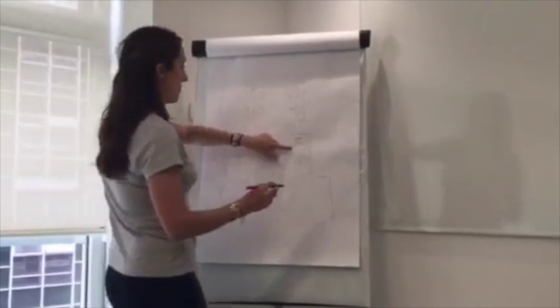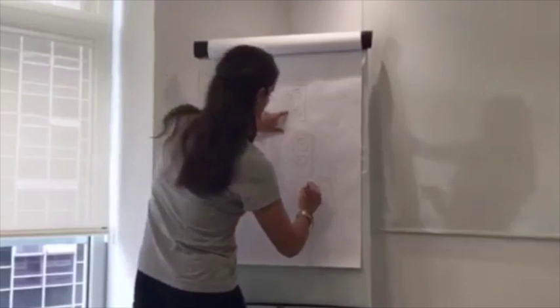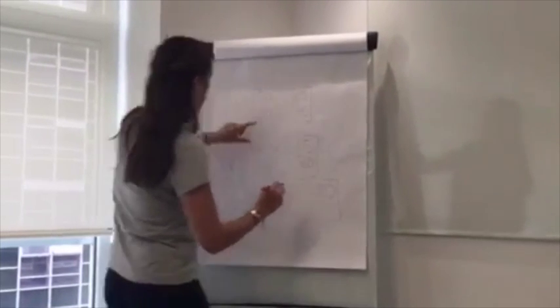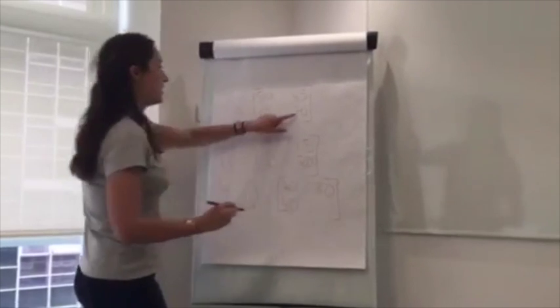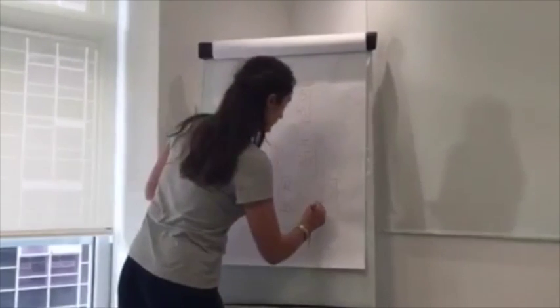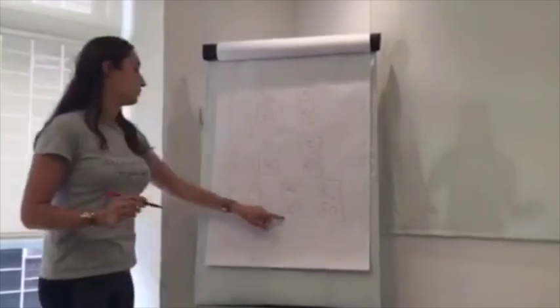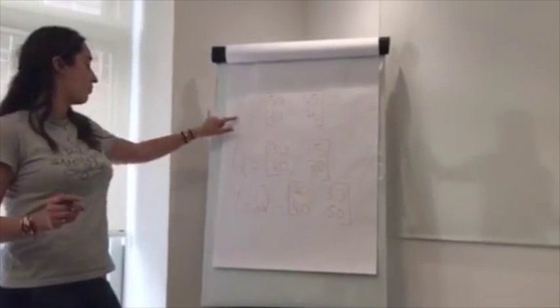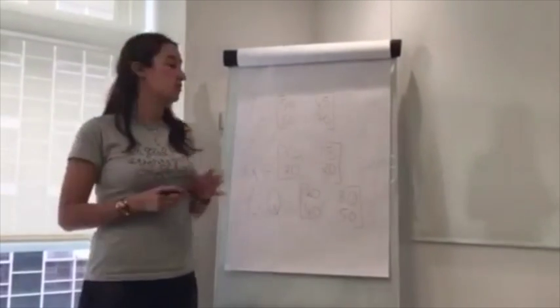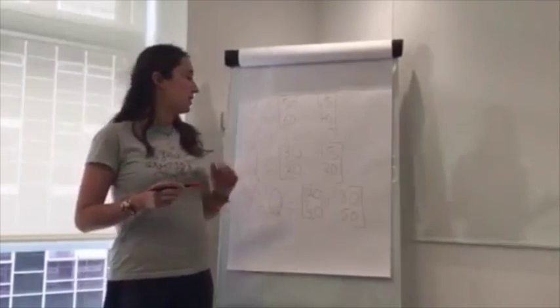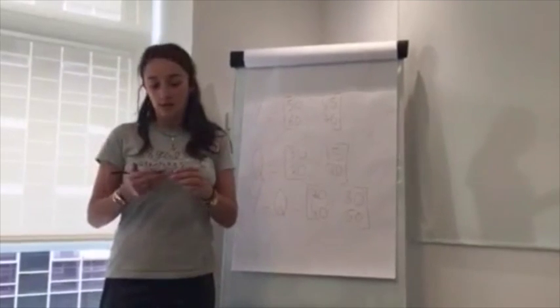45 minus 15, 60 minus 20, and 70 minus 20. So here we have the results of Y minus Q, and we have the results, the sales position of the products A and B in the remaining nine months.